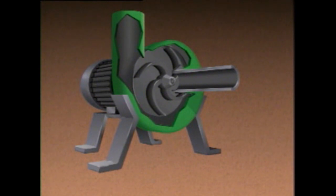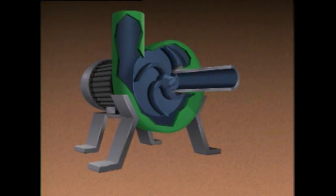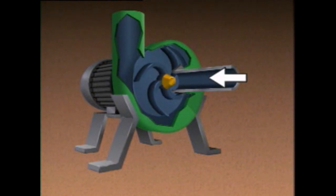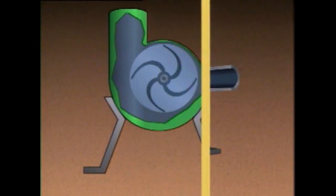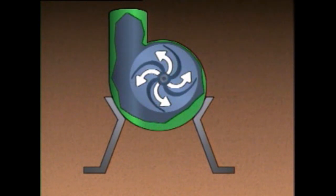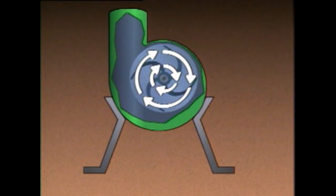During operation, a driver rotates the impeller, creating a centrifugal force that throws the process liquid outward into the volute. The outward movement of the liquid causes two things to happen. First, it creates a reduced pressure area at the suction eye of the impeller. This area of lower pressure draws more liquid into the pump and provides a constant flow of liquid. Second, it causes the liquid to gain speed, because as the liquid is forced to the outside of the rotating impeller, it must move faster to keep up with the impeller.